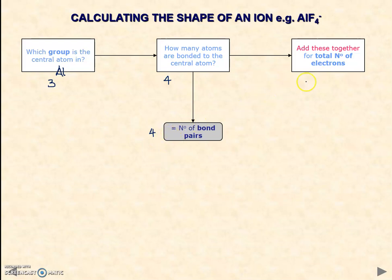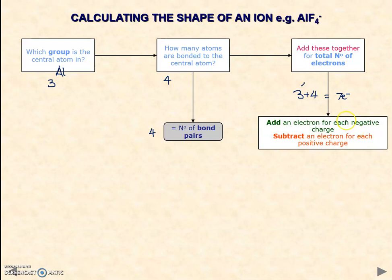If we add the central atom number together and the total number of atoms bonded together, we get 3 plus 4, we get seven electrons. That should ring the alarm bells because we're always dealing with electron pairs. At this point, when dealing with ions, you have to add an electron for each negative charge present or subtract an electron for each positive charge present. In this case, we've got a one minus charge, so therefore we need to add one electron. Therefore, 7 plus 1 equals 8 electrons.